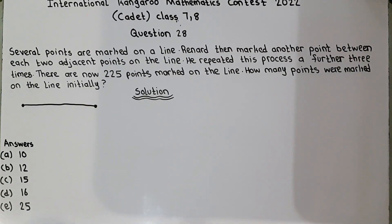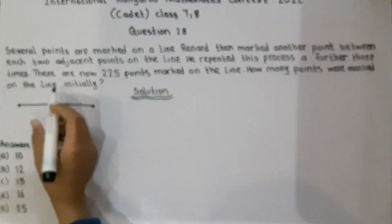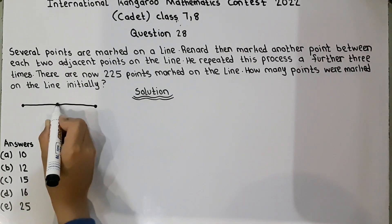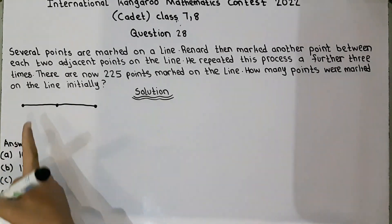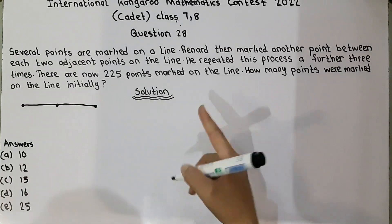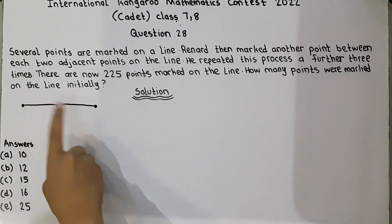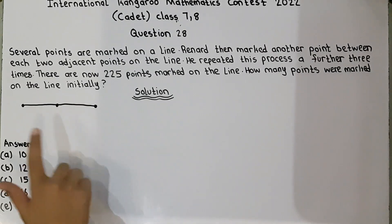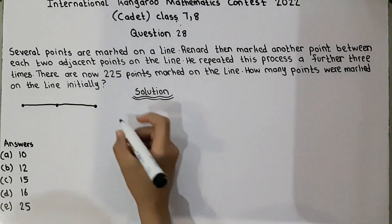So let's start slowly. I have taken a line. I will tell you about the formula. If I put one more dot between each pair of adjacent points — as stated in the question, he marked one point between two adjacent points — they have now become three. This creates the formula of n minus one.